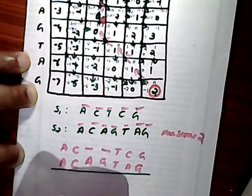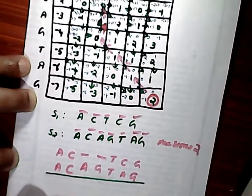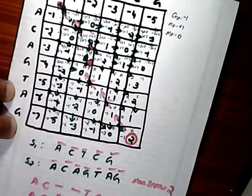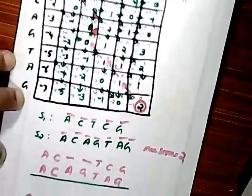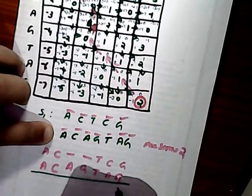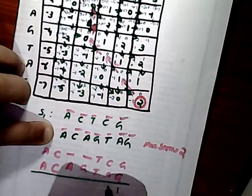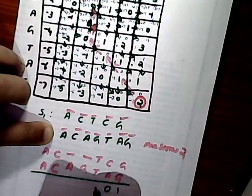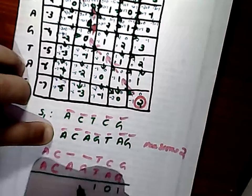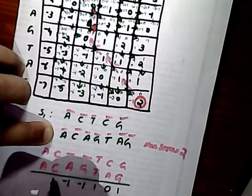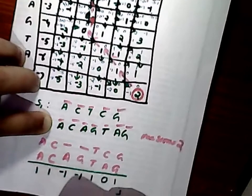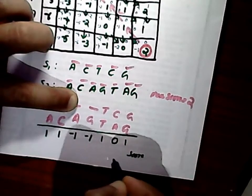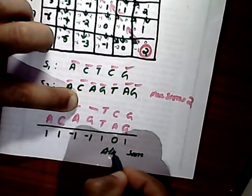Now we compute the sequence alignment score to verify. Gap value is minus one, matching point value is plus one, and mismatch score is zero. G and G match: plus one. C and A mismatch: zero. T and T match: plus one. G and gap: minus one. A and gap: minus one. C and C match: plus one. A and A match: plus one. The alignment score is calculated by adding all these values together, which equals two, confirming the value obtained from the table.